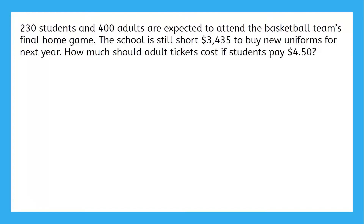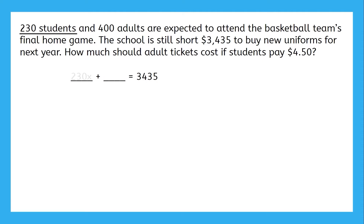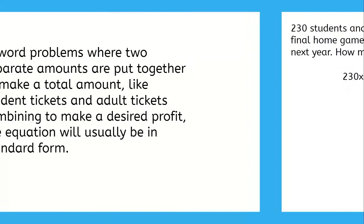230 students and 400 adults are expected to attend the basketball team's final home game. The school is still short three thousand four hundred thirty-five dollars to buy new uniforms for next year. How much should adult tickets cost if students pay $4.50? Just like last time, we need to figure out what we know and what kind of equation to set up. The amount of money they bring in has to equal what the school needs. Money from student tickets will be 230 times the student ticket cost, and money from adult tickets will be 400 times the adult ticket cost.